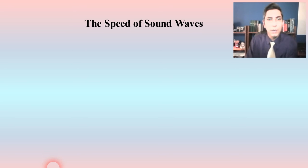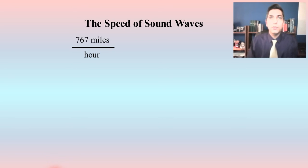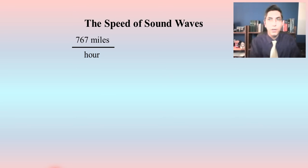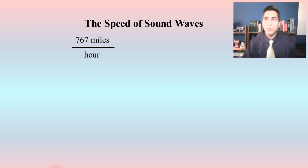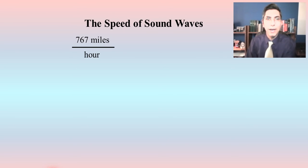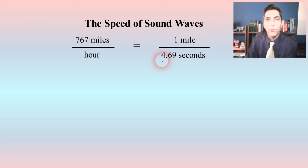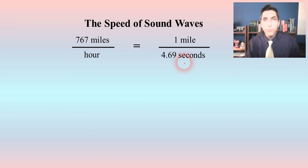Let's talk about the speed of sound waves briefly. The speed of sound in air is about 767 miles per hour. If we do the mathematics on this, 767 miles per hour works out to sound traveling one mile in about 4.69 seconds. Rounding that off, we can say that sound travels about one mile in about five seconds.